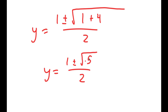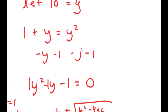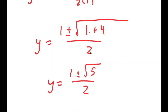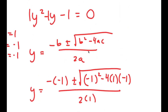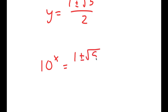This is equal to 1 plus or minus the square root of 1 plus 4 over 2, which is equal to 1 plus or minus the square root of 5 over 2. So the value of y is equal to 1 plus or minus the square root of 5 over 2. However, we aren't done yet, because remember we're solving for the value of x and not y. And we let 10 to the power of x equal to y. So I get 10 to the power of x equals 1 plus or minus the square root of 5 over 2.